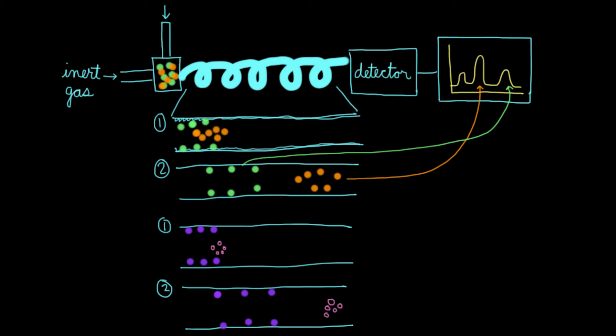So we've talked about the size of the particles, or the molecular weight of the compound, along with the boiling points as being ways to discern between compounds in gas chromatography.